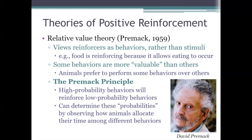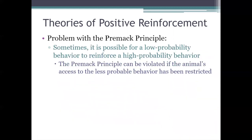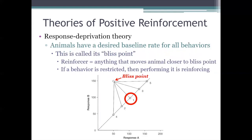The Premack principle clearly has important practical applications, and Premack also introduced a significant conceptual change by viewing reinforcers as behaviors rather than stimuli. Still, the Premack principle is not without its problems. The most fundamental problem is that sometimes a less probable behavior can actually reinforce a more probable one — in other words, it's possible to violate the Premack principle. Because of that, other theorists revised it to point out that any behavior can act as a reinforcer if the animal has been deprived of performing that behavior as much as it normally would. This is called response deprivation theory, also known as bliss point theory, which suggests each animal has an optimal way it would like to spend its time and will try to get as close to that bliss point as possible.